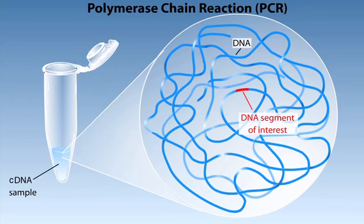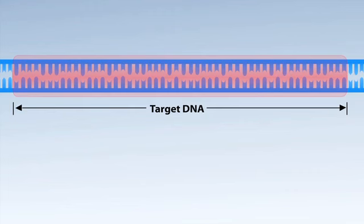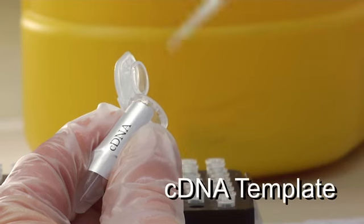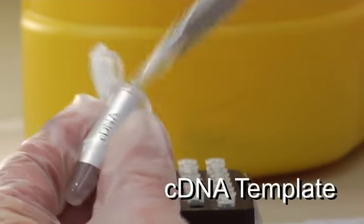In PCR, that cDNA that we've just generated will be used as a template from which we'll copy just the gene that we're interested in. In this case, the insulin gene. To prepare the reaction, we take a sample of the cDNA template that we made earlier.